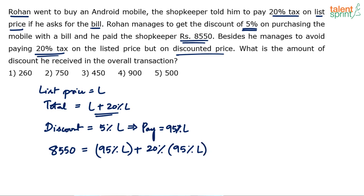20% tax is supposed to be paid on the list price only, but he managed to get a discount there also. He says he'll pay tax only on the discounted price and not on the listed price. So, Rohan finally pays 95% of the mobile value and 20% tax on whatever that value comes out to be. This is equal to ₹8,550. First and foremost, from this step, you have to find the value of L.